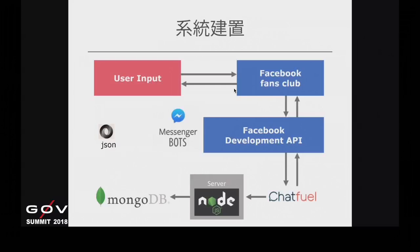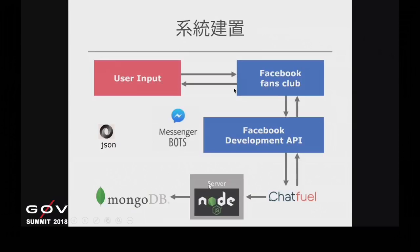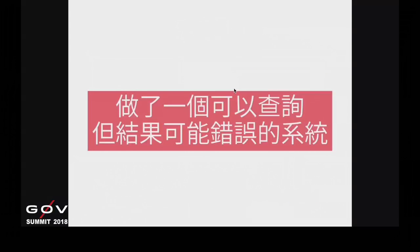我們在建立這個服務的過程中，很好奇到底會有哪些使用者需要這樣的使用狀態。所以我們自己建立的系統，有記錄了使用者是誰，以及他詢問了哪些相關的語句。技術部分就說明到這裡。誠實地講，我們做了一個可以查詢但結果可能錯誤的系統。